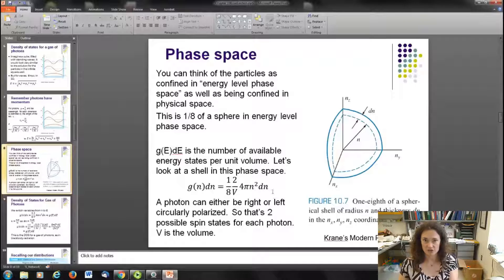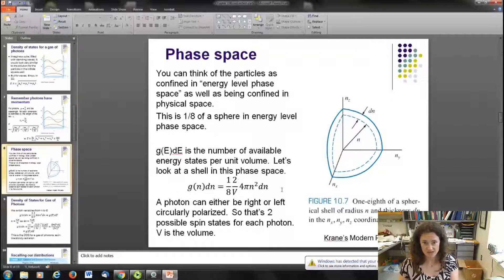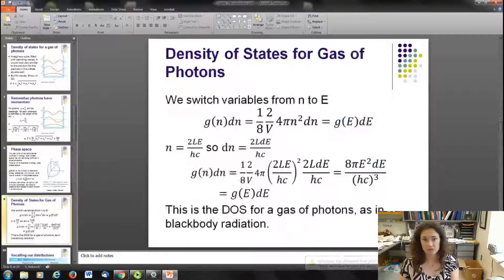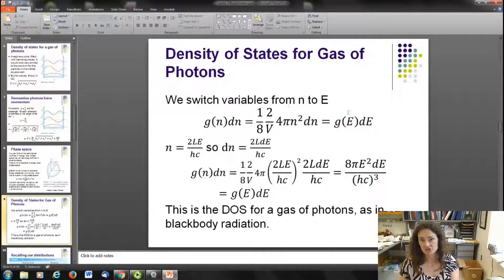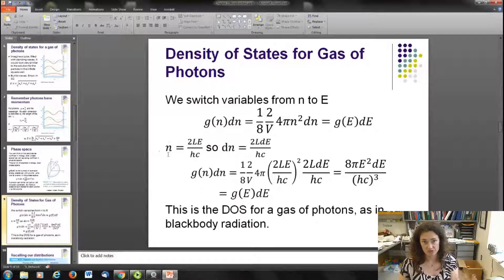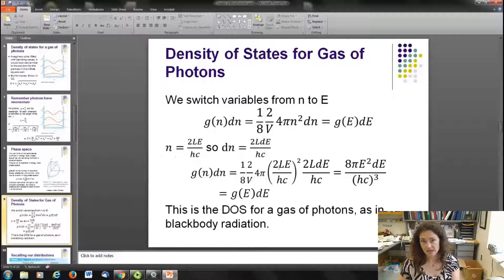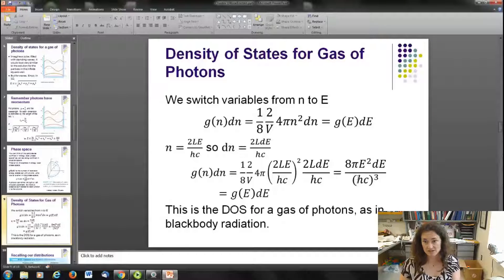So the density of states is going to be this factor of 1/8 times 1 over the volume, and then we have our 4πn². That's the area of our sphere in phase space. And then to get the volume, we multiply that times dn, which would be the thickness of our spherical shell. Now this factor of 2 here is because there's two possible values for the spin of a photon. Remember in the gas of particles, we had 2s+1 to account for the multiplicity of the spin states. But for a photon, there's only two choices. It's either right circularly polarized or left circularly polarized. This is our expression for the density of states in terms of our energy level n. Now, if we want to switch that over, we change variables from n to energy using n = 2LE/hc and dn = 2LdE/hc. If I plug in for that value of n and dn into my expression, then after a little bit of algebra, I get 8πE²dE/hc³. And that's our density of states for a gas of photons, like black body radiation.